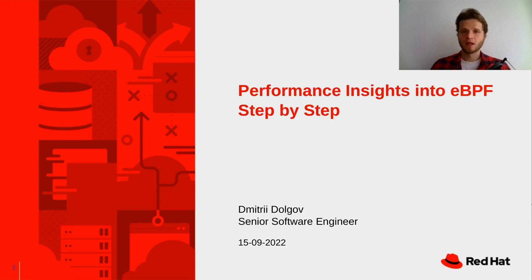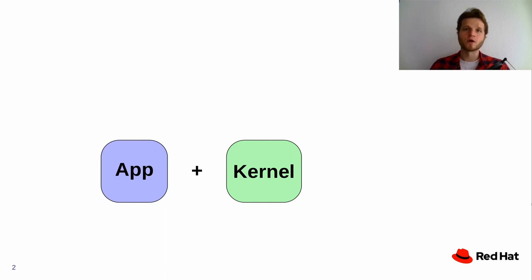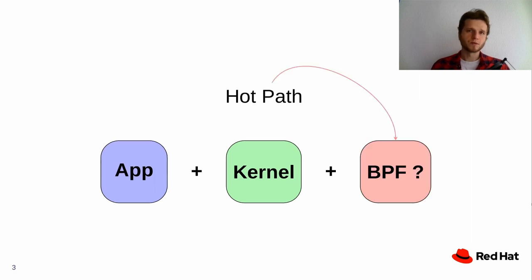A bit of background: originally when talking about performance of a single-node application, everything is more or less straightforward. We have a user space application that does some business logic, relies on kernel features, and we mostly understand which metrics to acquire. We can profile everything and it's fairly transparent. What happens nowadays is that quite often we get systems that include BPF components, and unfortunately performance insight in this case is not that straightforward — it can be tricky to understand what's going on inside those BPF parts.